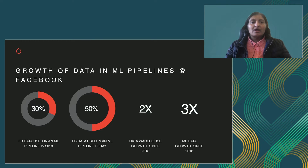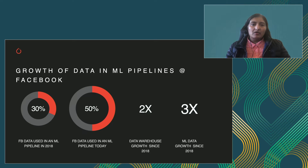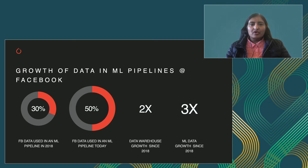Inside Facebook, the data in our ML pipelines is growing very rapidly. In 2015, 30% of the data in our warehouses was being used for machine learning, and now more than 50% is being used for machine learning. At the same time, we had a 2x growth in the overall size of our data warehouse, so if you compute the math, that is more than 3x growth overall for the ML data.